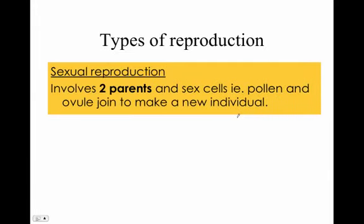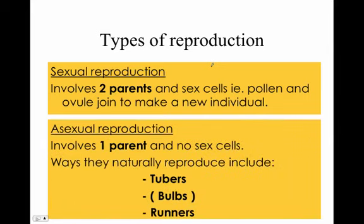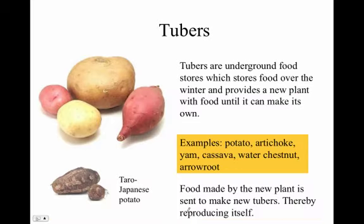There are several types of reproduction. Sexual reproduction involves two parents — that's pollen and eggs from the ovule — and that makes a new individual. Asexual reproduction is just one parent, no sex cells involved. Examples include tubers, bulbs, and runners.